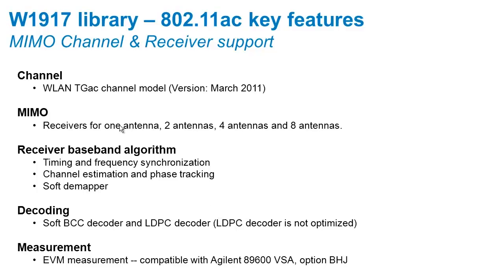It also provides the ability to do 1, 2, 4, and 8 antenna MIMO, receiver baseband algorithms with timing and frequency synchronization, as well as decode all the way out to bits. So if you input bits, code them, and transmit them, you can decode them and get a bit error rate. In addition to bit error rate, you can also measure EVM, and the output of the signals created with the W1917 Library are compatible with other Agilent applications, such as the 89600 VSA software.